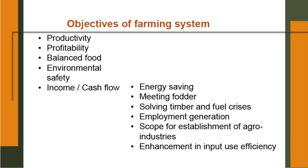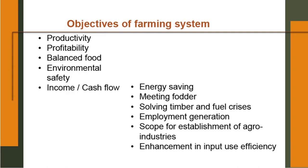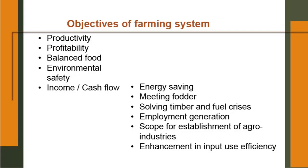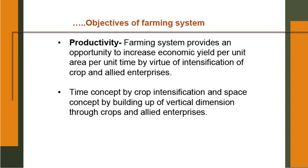Objectives of farming system: productivity, profitability, balanced food, environmental safety, income or cash flow around the year, energy saving or clean energy. The emphasis of the Government of India and the world is on clean energy, particularly solar power. Solar power can be exploited under integrated farming system also. Meeting fodder requirements, solving timber and fuel crisis, employment generation, scope for establishment of agro-industry — IFS can be combined with agro-industry and certain value additions can be done right in the integrated farming system, and enhancement of input use efficiency.